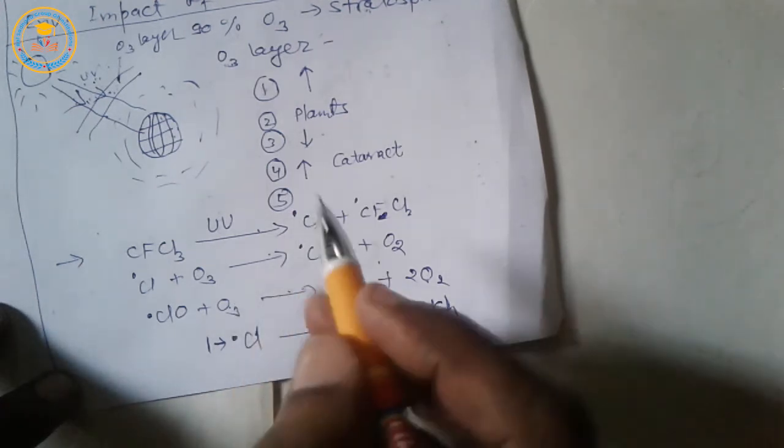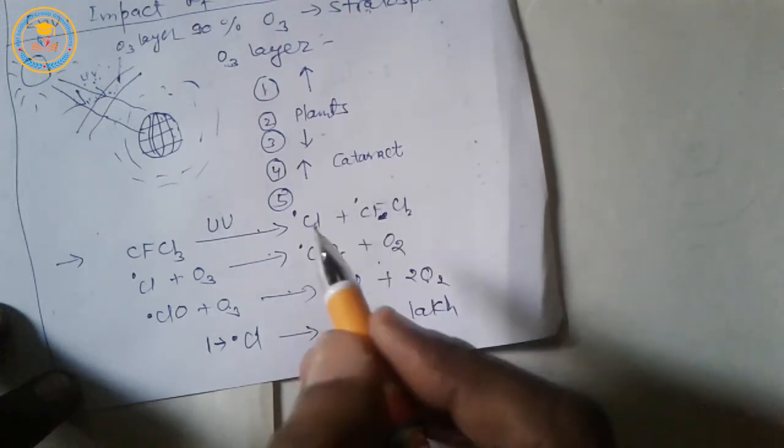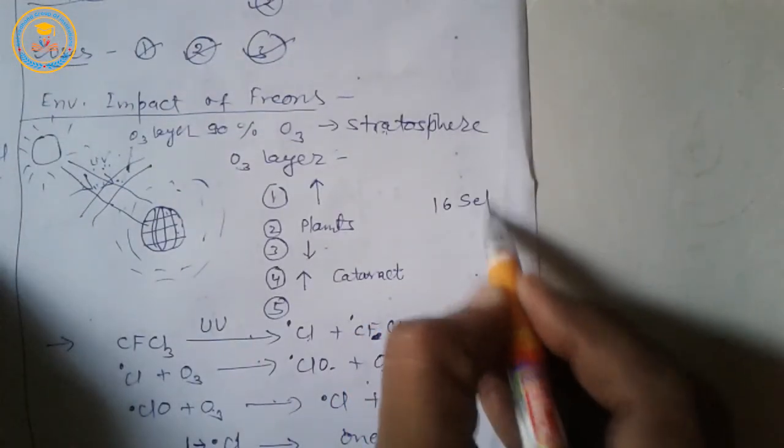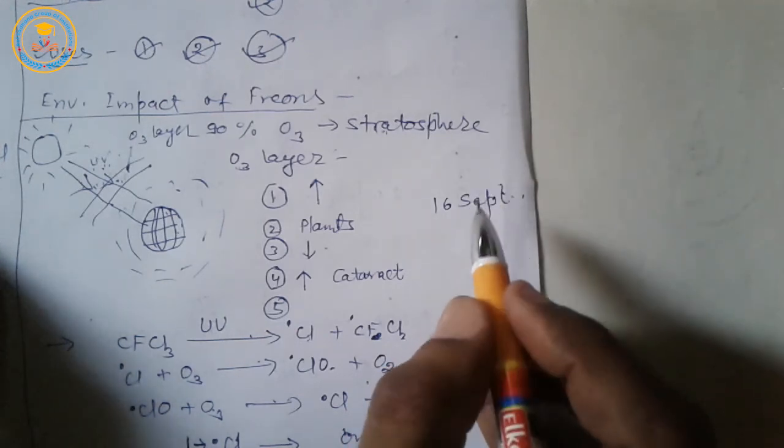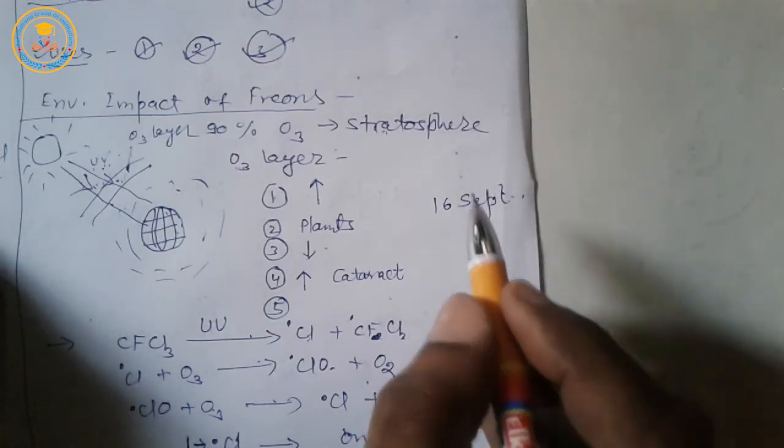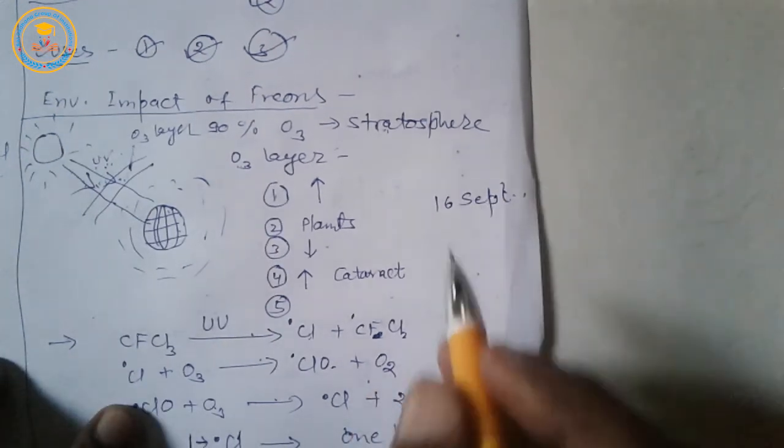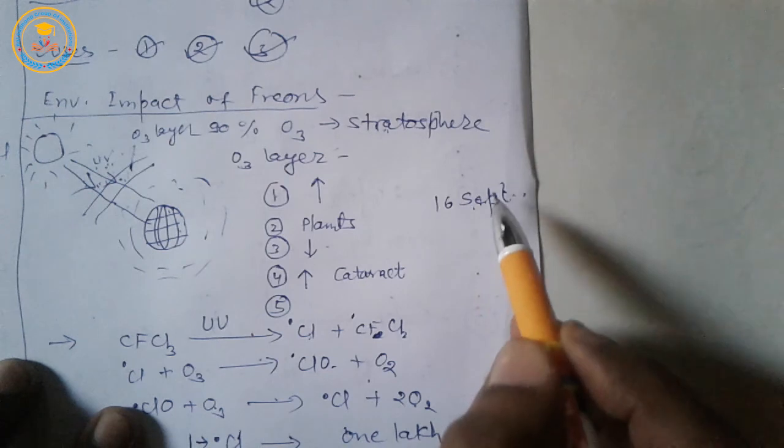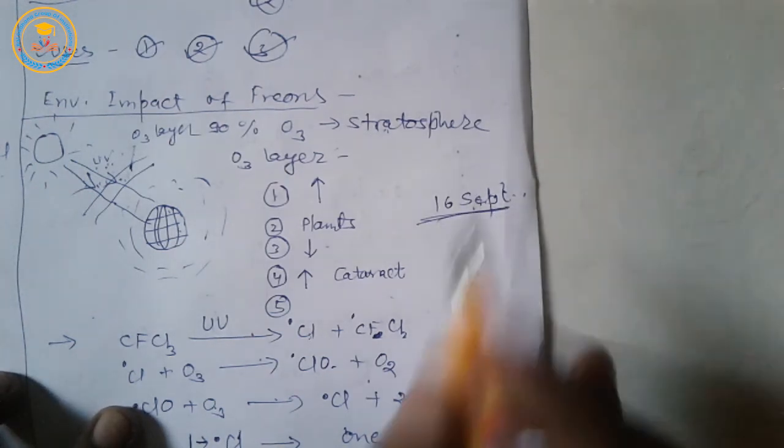To develop awareness towards the preservation of ozone, every year 16 September is celebrated as International Day for Preservation of Ozone. Very important.